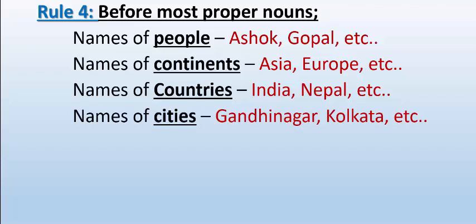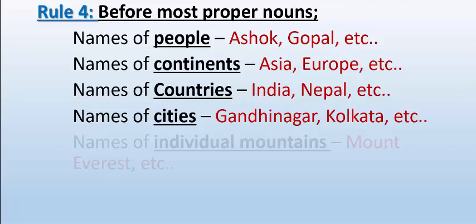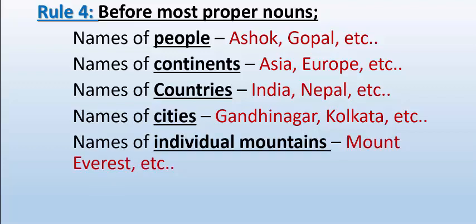Names of cities — we don't use article. For example, Gandhinagar, Kolkata, New Delhi, New York. You will never see an article before the names of these cities. So do not use article before names of cities.